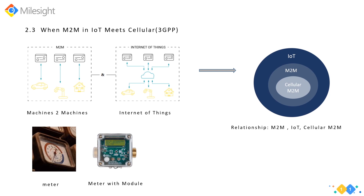A wireless communication module can be embedded into a machine. Then a wireless communication network can be used to access the machine, meeting demands for monitoring, command sending, data collection, and measurement. For example, as early as 2001, there were projects for wireless meter reading — water meter, electric meter, and gas meter reading — through SMS messages over 2G networks. At that moment, M2M, IoT, and 3GPP agreed to work together to develop the cellular M2M network, since infrastructure for wide-area coverage like 2G SMS was readily available and could satisfy network layer requirements for IoT quickly and effectively.